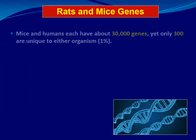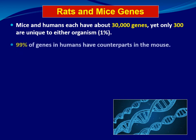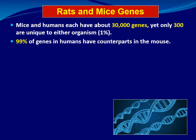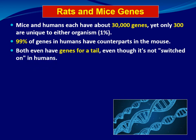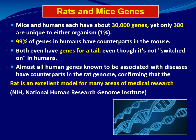Mice and humans each have 20 to 30 thousand genes, yet only 300 are unique to either organism — about one percent. This means 99% of genes in humans have counterparts in the mouse, and both even have genes for a tail, but it is switched off in humans. The National Human Genome Research Institute recently reported that almost all human genes known to be associated with diseases have counterparts in the rat genome, confirming the rat is an excellent model for medical research.